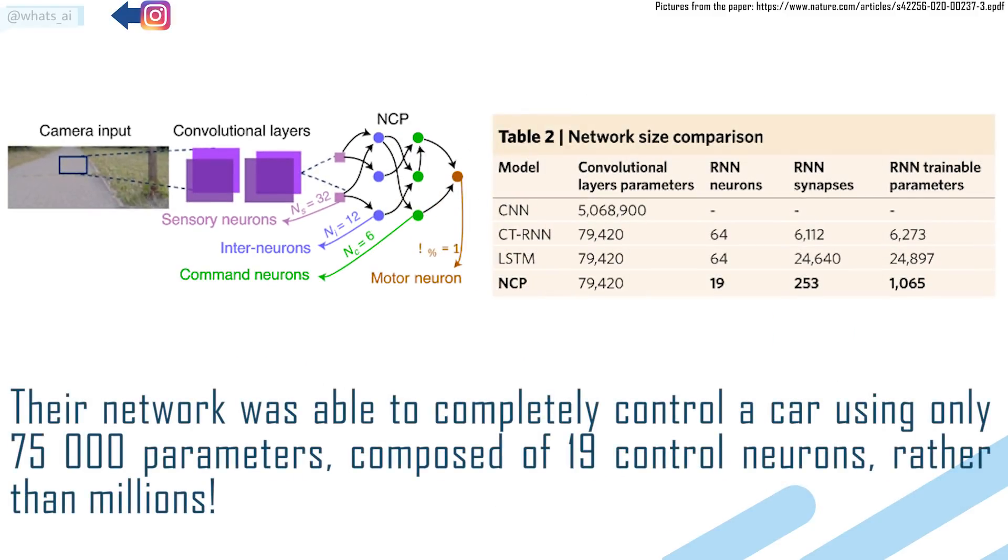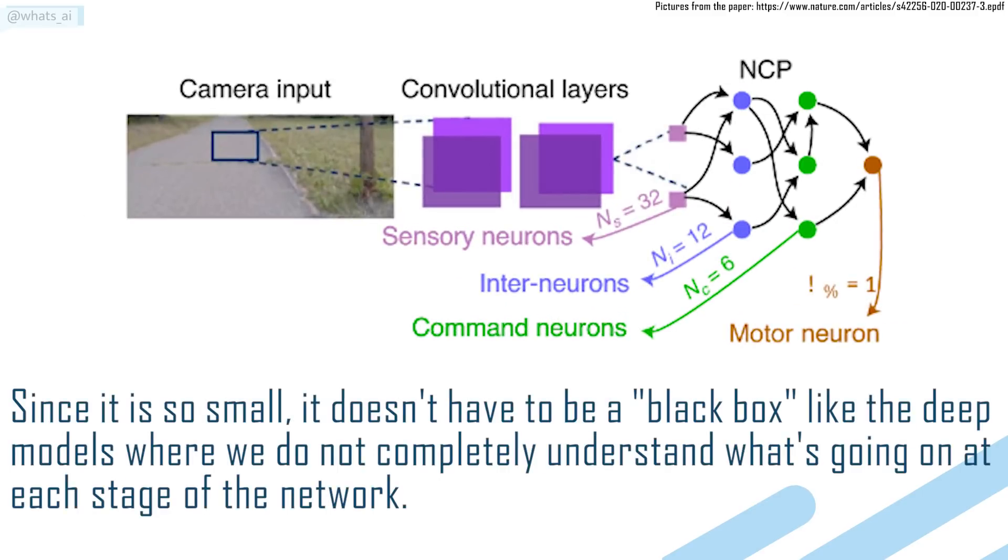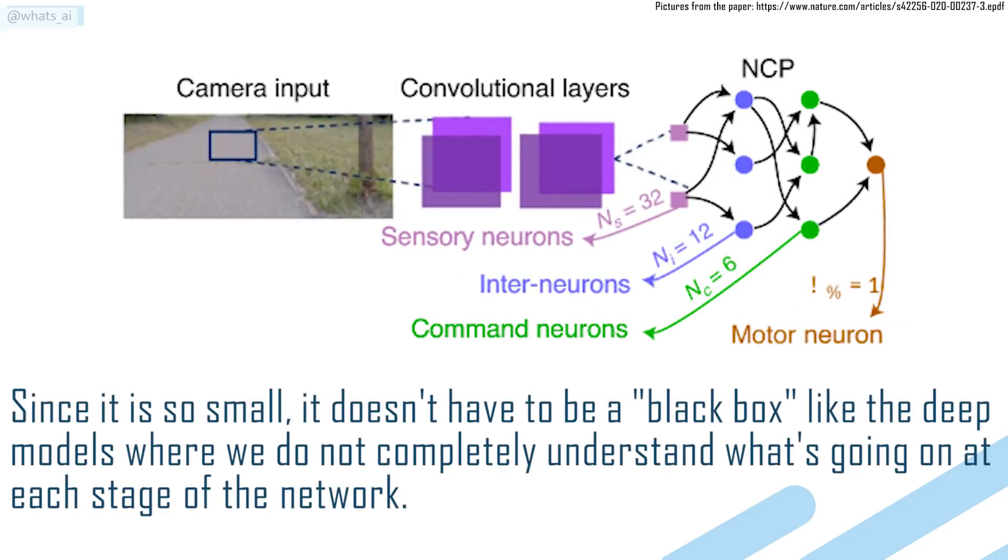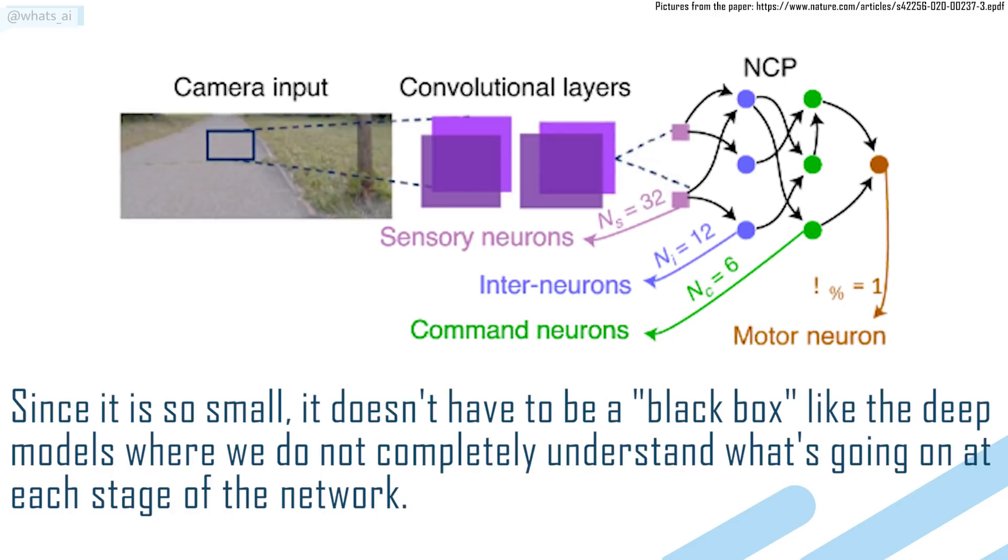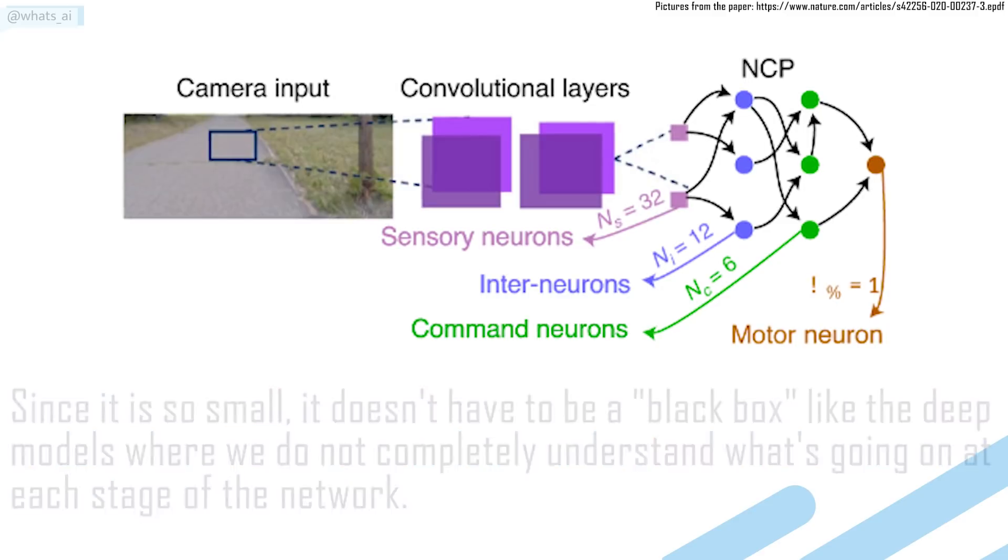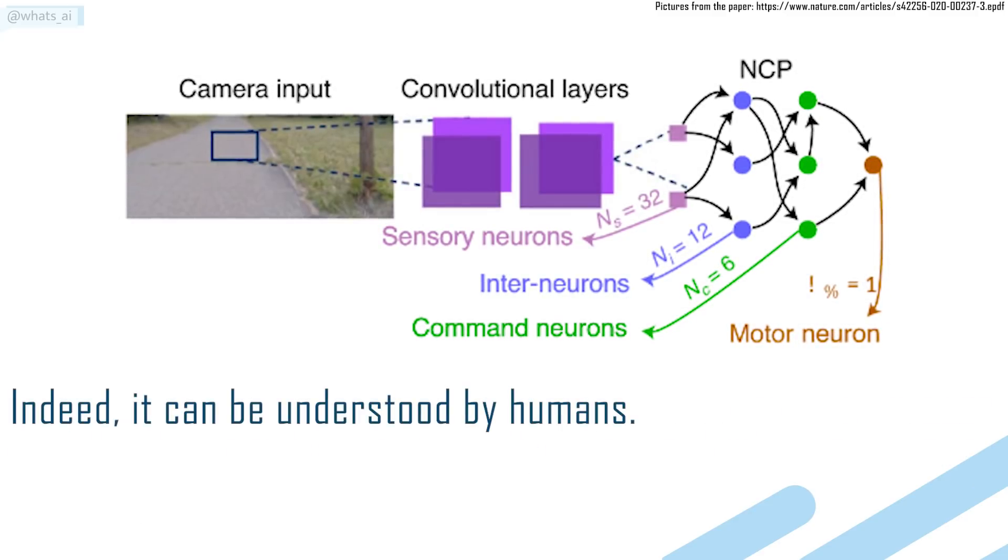Their network was able to completely control a car using only 75,000 parameters, composed of 19 control neurons rather than millions. Since it is so small, it doesn't have to be a black box like the deep models where we do not completely understand what's going on at each stage of the network. Indeed, it can be understood by humans.